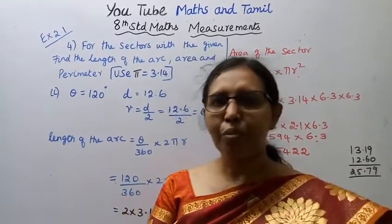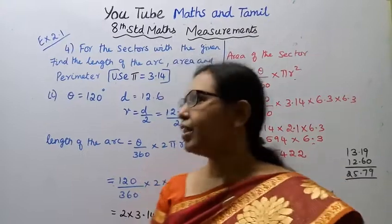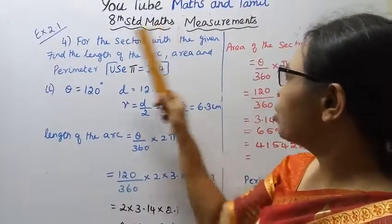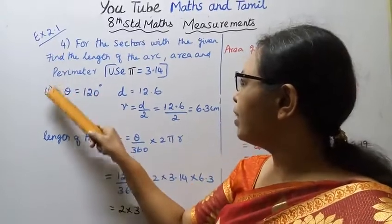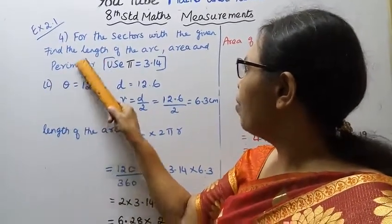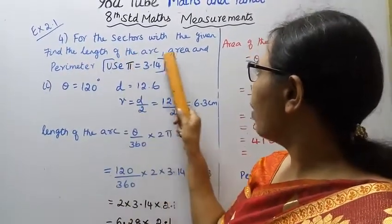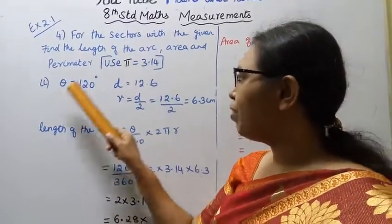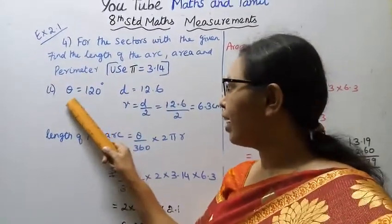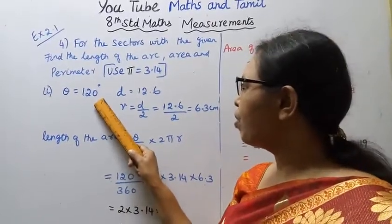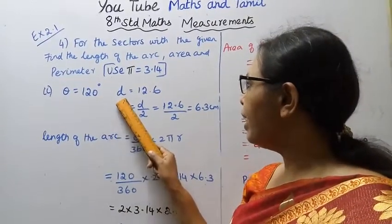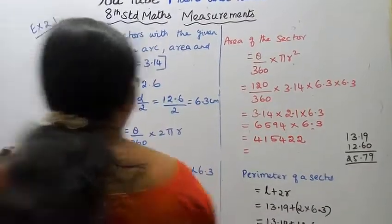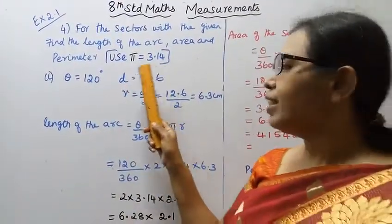Hello students, welcome to Max and Tumble channel. This is Exercise 2.1 on measurements, fourth subdivision. We need to find the length of the arc, area, and perimeter of the sector. The central angle theta is equal to 120 degrees and the diameter is 12.6.